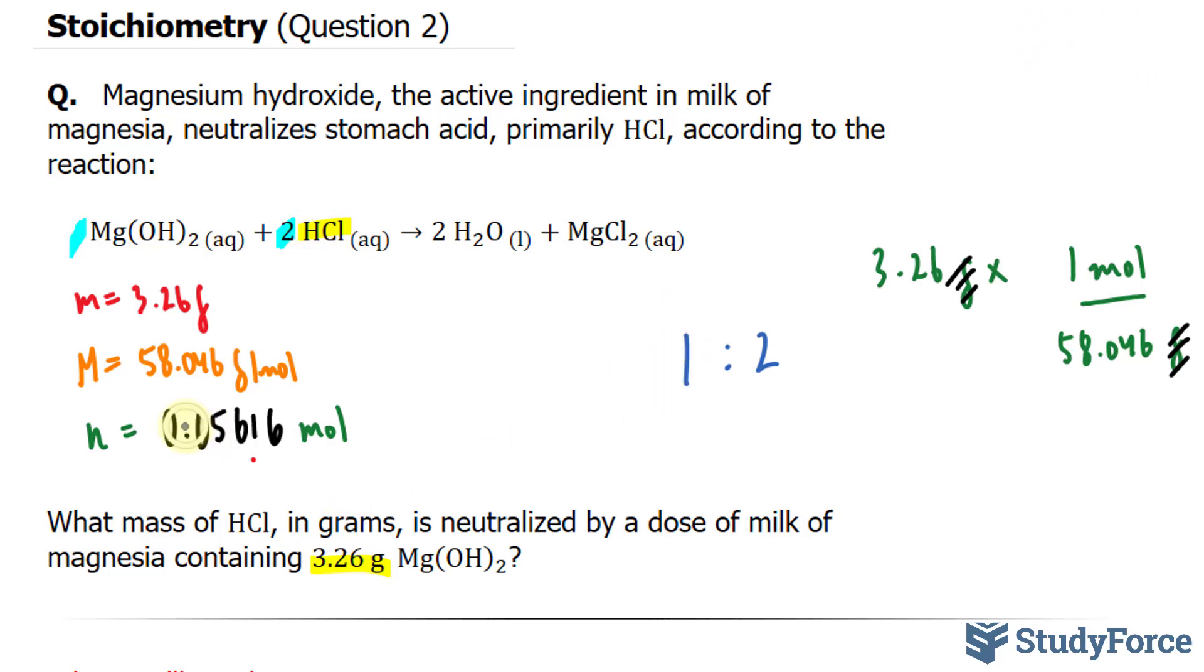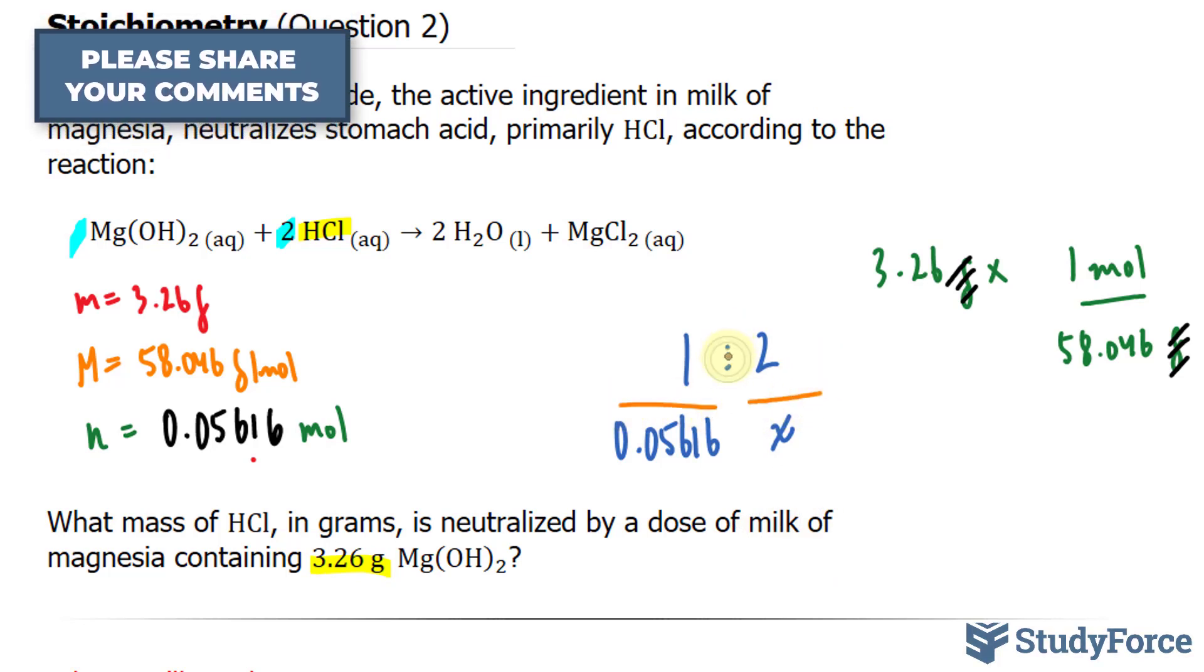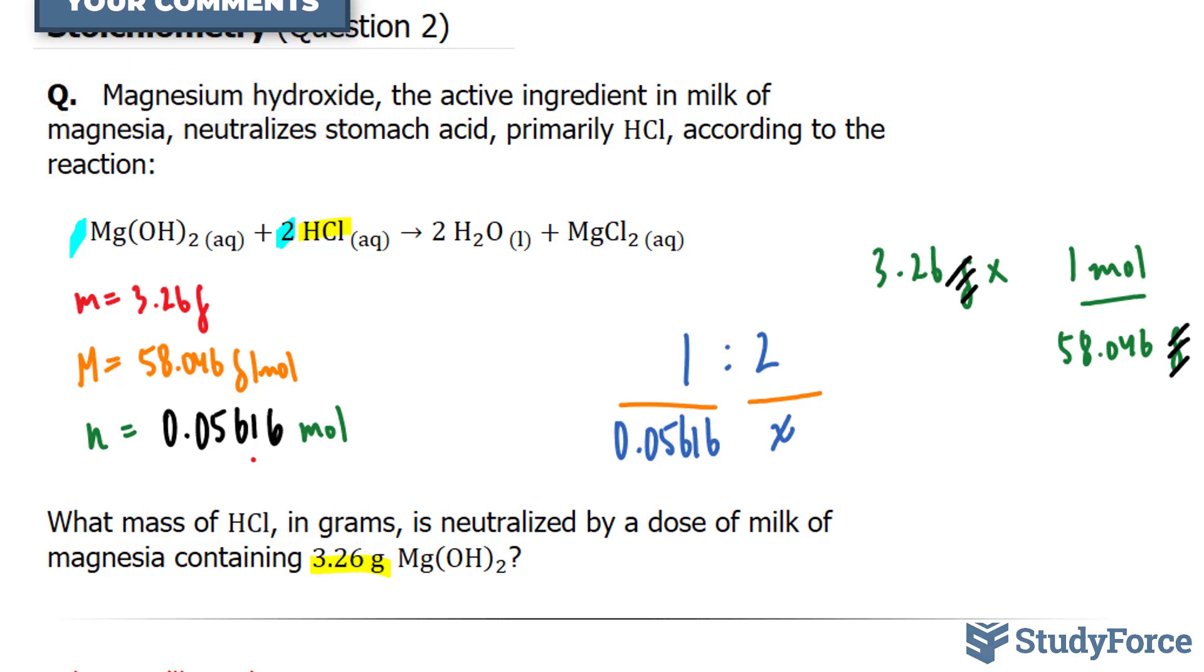Underneath this 1, I'll write down 0.05616 because this number corresponds to magnesium hydroxide. And underneath this 2, I'll write down x because that's our unknown. We've created a ratio here. Think of two fractions, one on the left side and one on the right side, separated by an equal sign or this colon. To solve such a fraction, we cross multiply. Take this number, multiply it by 2. Take this variable, multiply it by 1.